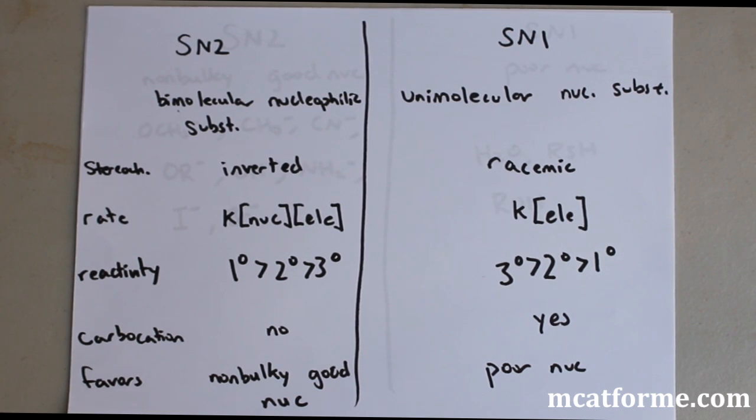The carbocation, which one's formed? SN2? No. SN1? Yes. And that contributed to the racemic mixture and also the reactivity.